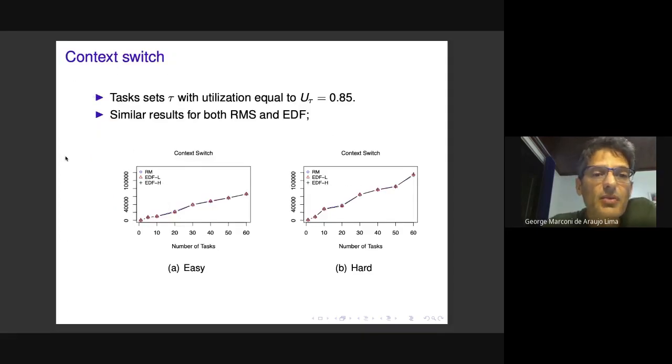For the first metric, context switch overhead, both graphs show no significant difference between the three algorithms. Rate monotonic scheduling uses the native fixed priority scheduling provided by FreeRTOS, while EDF-L and EDF-H are the list-based and heap-based versions of EDF. As you can see, context switches don't differentiate them.